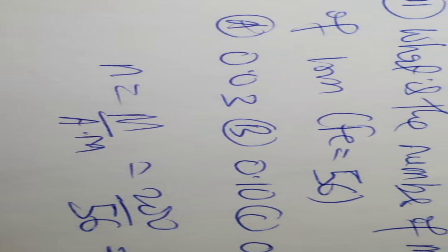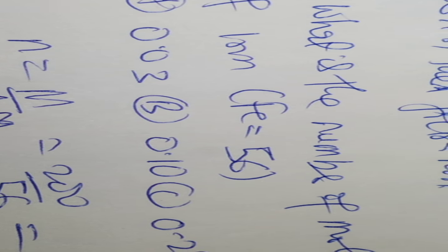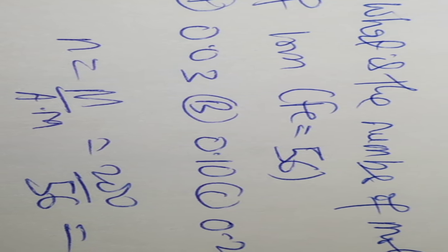Number 11 says: What is the number of moles in 200 grams of iron? Iron is Fe 56. So the answer to this question is option D. How do we get D? Number of moles is mass over atomic mass. We use atomic mass in this case because iron is monatomic. So the mass of iron is 200 divided by 56. That gives us about 3.6 moles approximately. So option D is right.